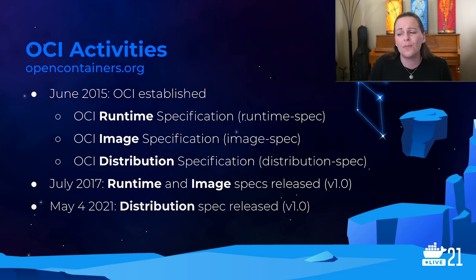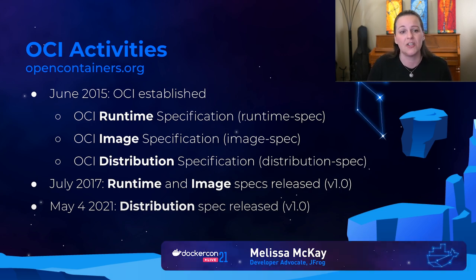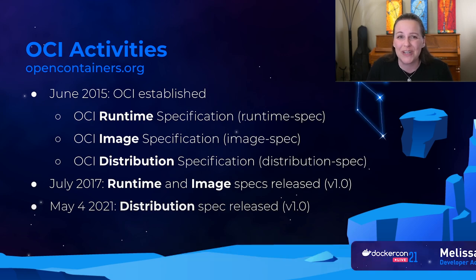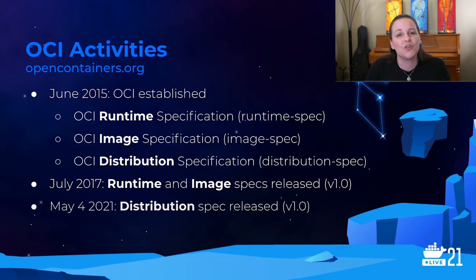The OCI accomplished some big things. They produced three specifications: the OCI runtime specification, the image specification, and the distribution specification. In 2017, the runtime and image specs were released as version 1.0. And then just recently — May 4th, 2021 — the distribution spec was released. I have more to say about the specs and Docker's place in them in a minute.